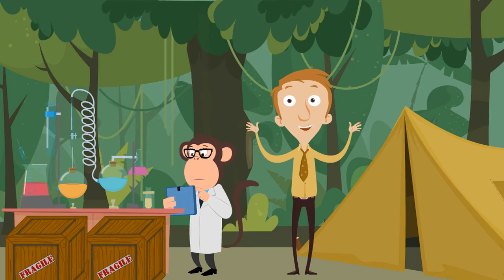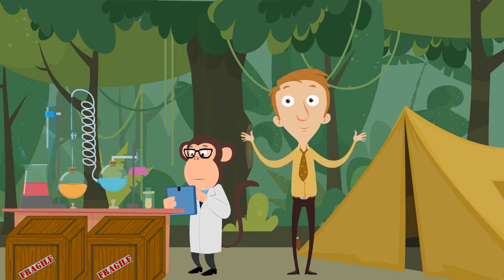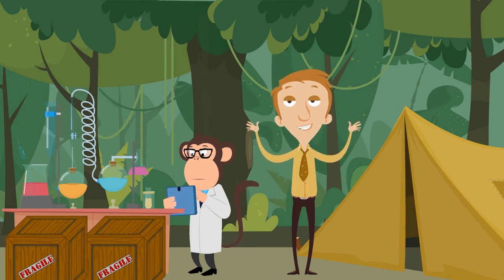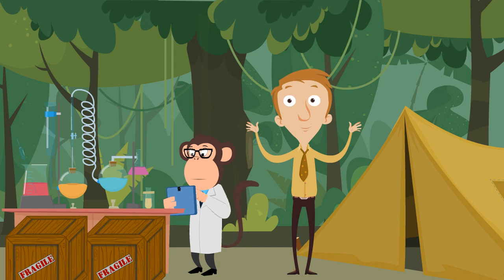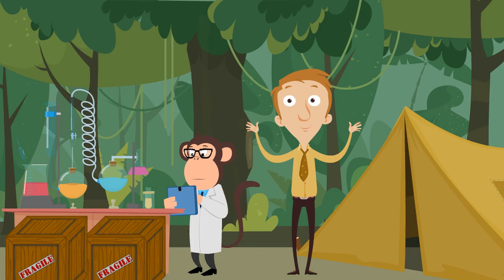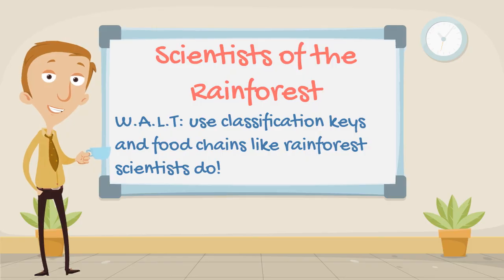There you have it — that's some of the work that rainforest scientists get up to. Now I don't know about you, but I'm a little bit concerned about where humans come on those food chains. So if you want the job, you can have it — I'm not hanging around here any longer. So our goal for today's lesson was to use classification keys and food chains like rainforest scientists do. When you're ready, you can try the practice activities down below. That's all we have time for today. Until next time, take care.